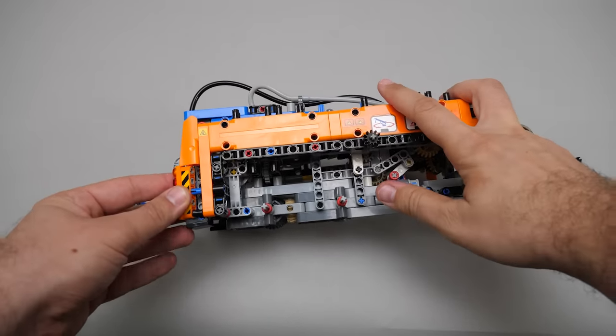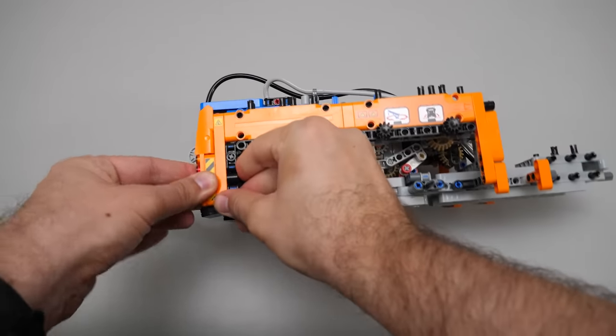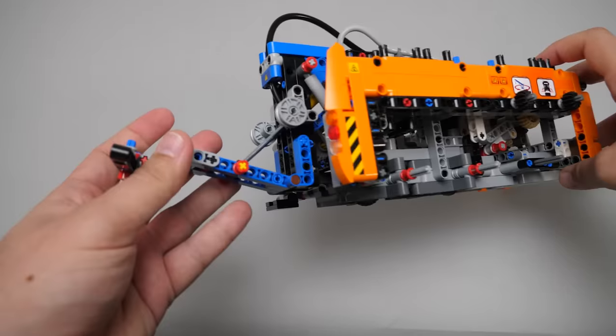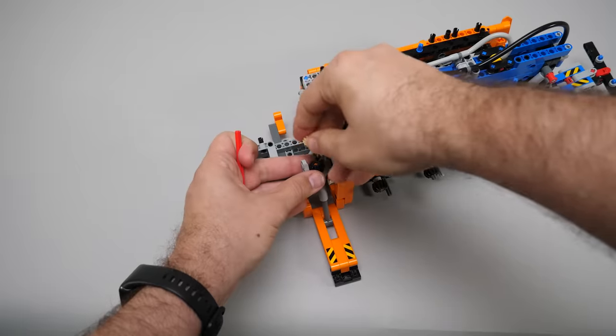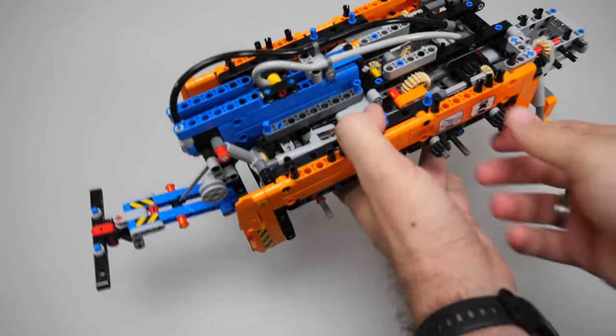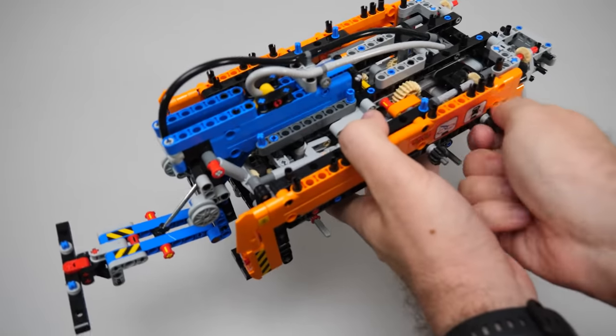Some side panels are added and stickers start to pop up as well, along with the smaller details like the rear lights. Here comes the side outrigger that is operated by a linear actuator. Once both outriggers are installed they need to be synchronized with the rear ones.